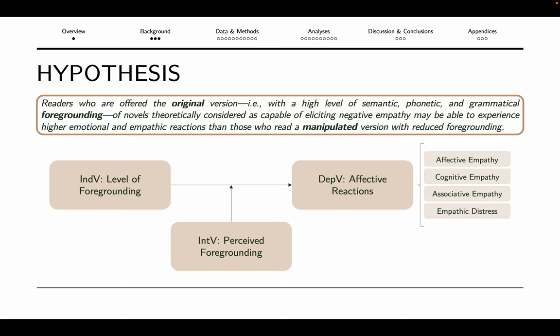This slide displays my theoretical model, which involves an independent variable — the level of foregrounding — influencing the dependent variable, the affective reaction, expressed by four different dimensions, and a possible intervening variable, the perceived foregrounding, which I will discuss later.